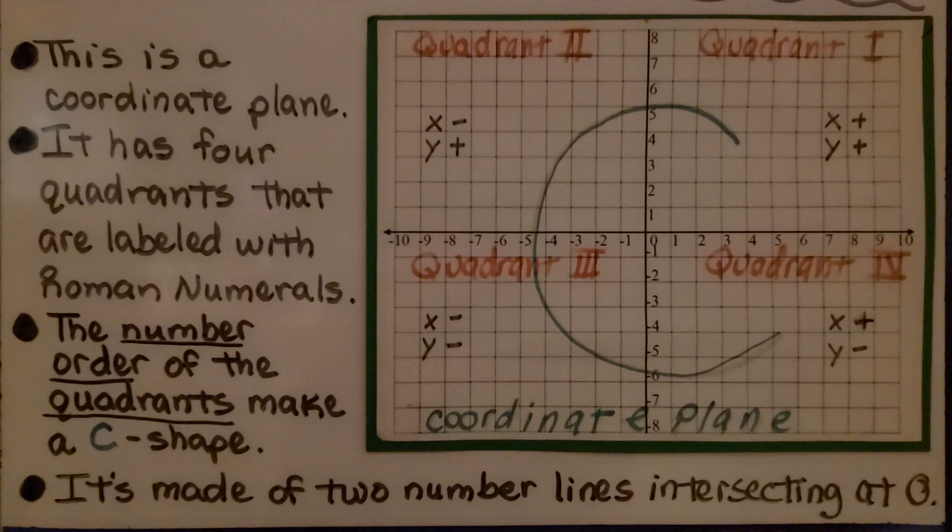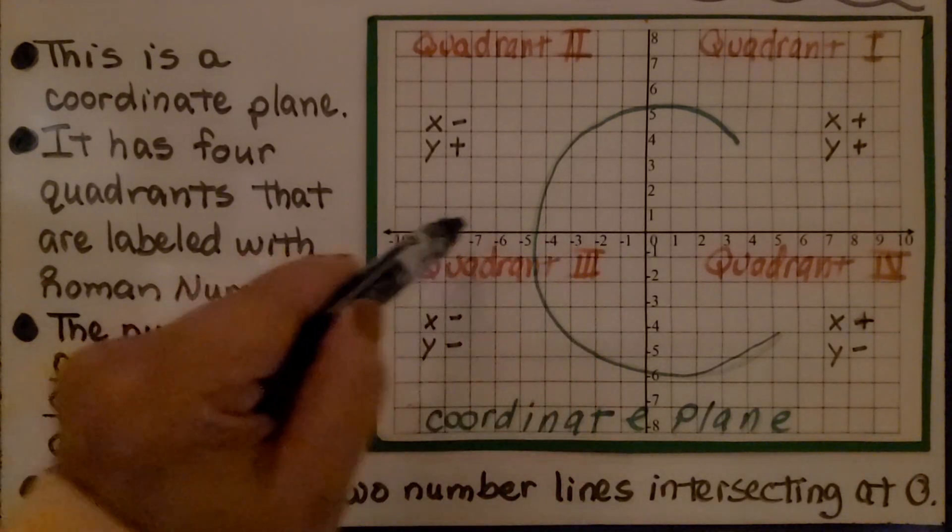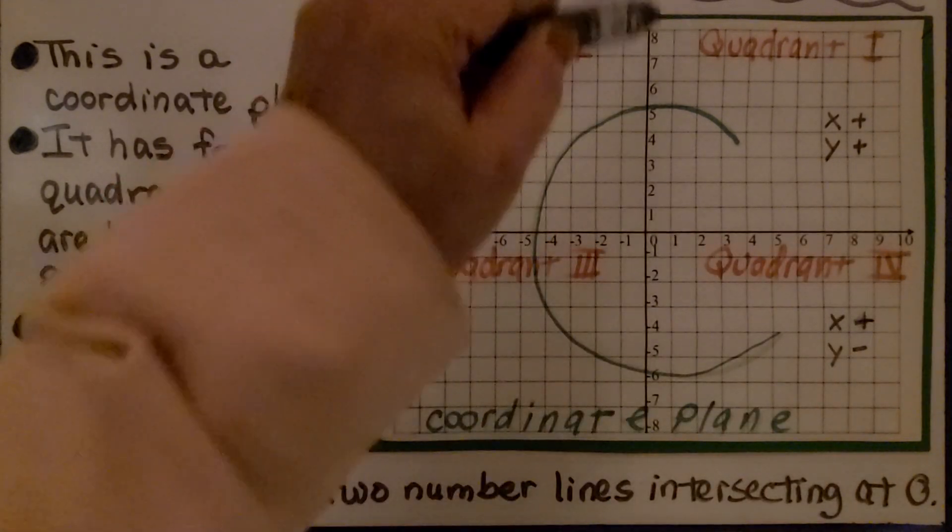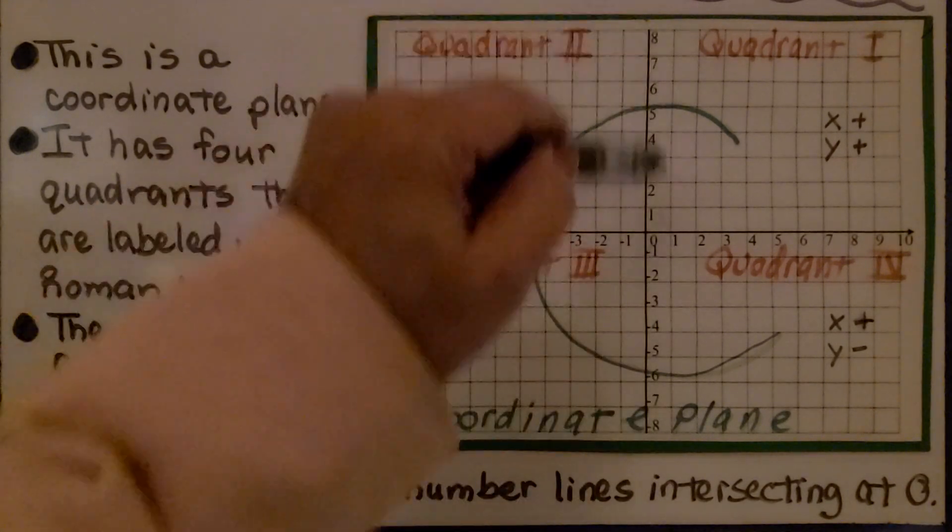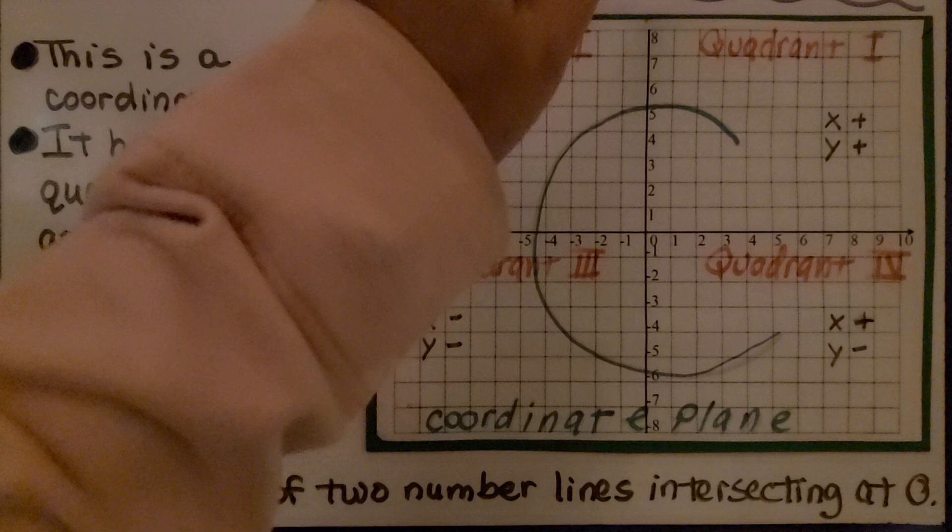And it's made of two number lines intersecting at zero. We have a horizontal number line, that's the X, and a vertical one, that's the Y. I always say you can remember that the vertical one is Y because it goes Y to the sky.